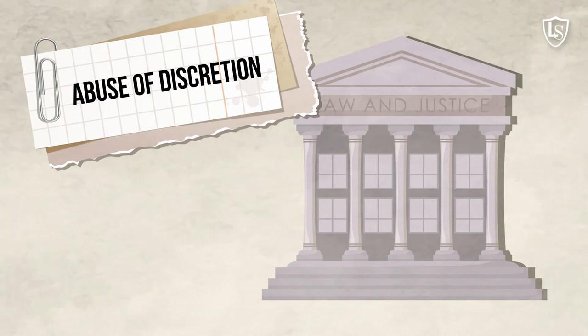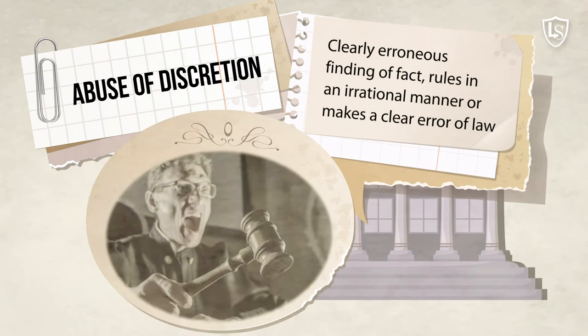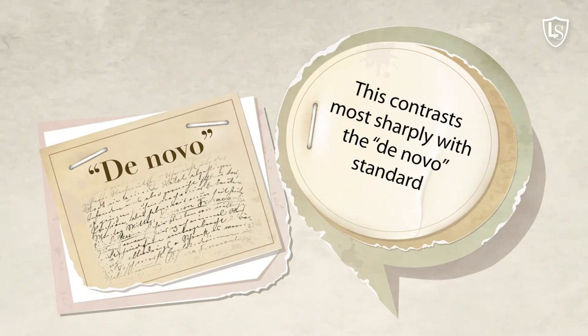Abuse of discretion may also be found when the lower court rests its decision on a clearly erroneous finding of fact, rules in an irrational manner, or makes a clear error of law.